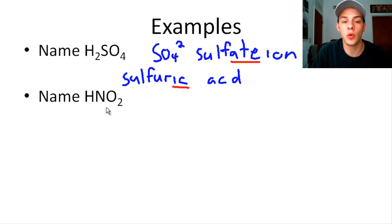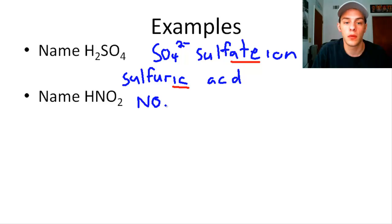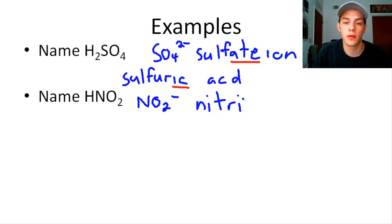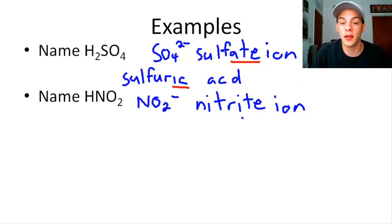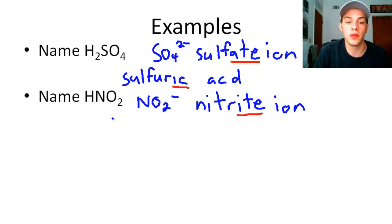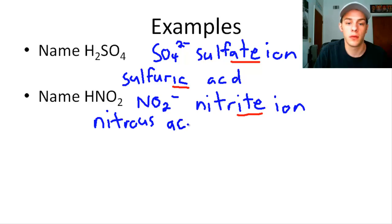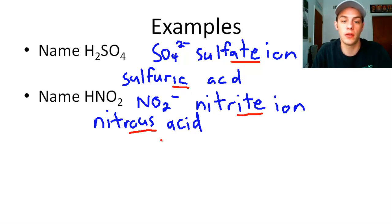Let's name HNO2. Here we have the NO2 minus ion, which is called the nitrite ion. Since our oxyanion ends with -ite, we use the suffix -ous. So this is called nitrous acid. Remember: -ate goes with -ic, and -ite goes with -ous.